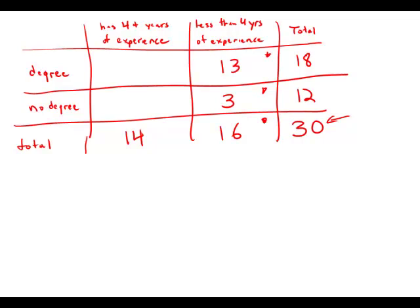We know that this number and this number have to add up to this number, so this number must be 9. And then we know that this number and this number have to add up to 14, so this number must be 5.